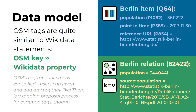Unlike in Wikidata, wherein you can have qualifiers and references for your statements, in OpenStreetMap the tag is quite flat — there are no secondary levels of tags, everything is flat. That's why we have to put what you call secondary tags. For example, source:population to indicate that the population tag has this source.